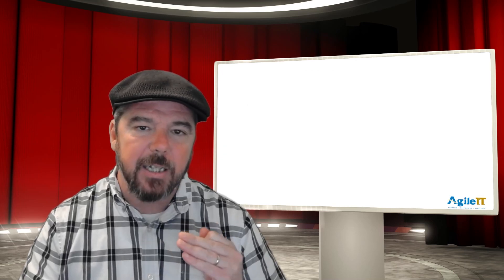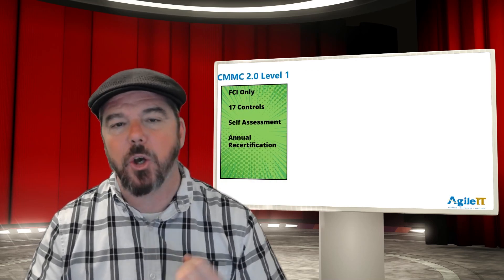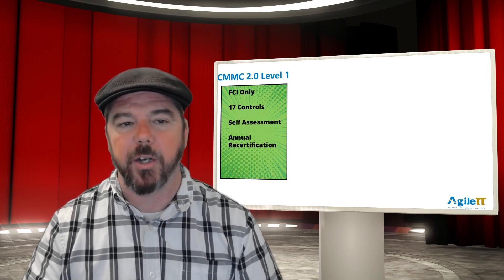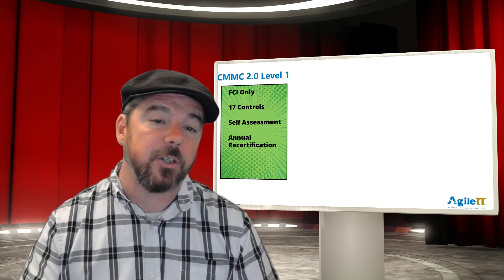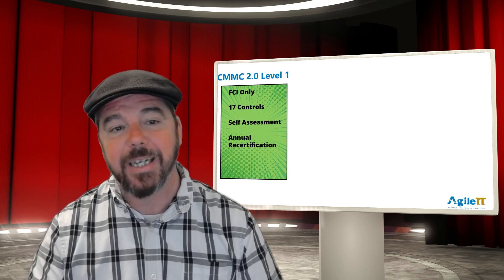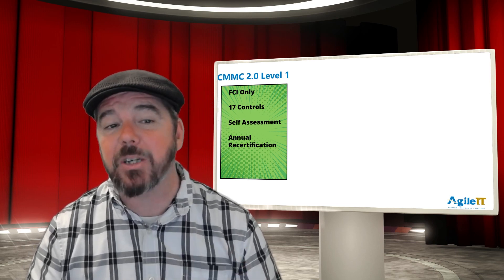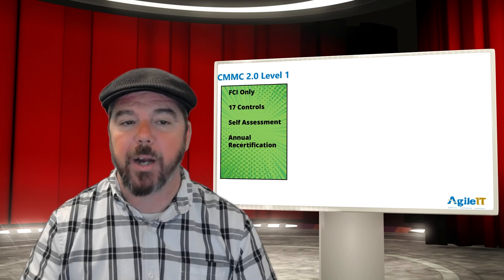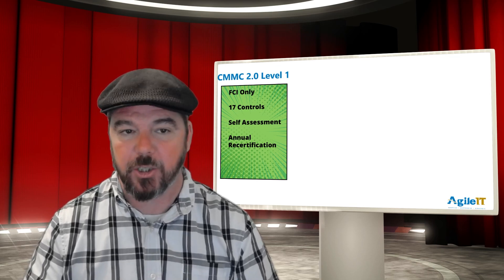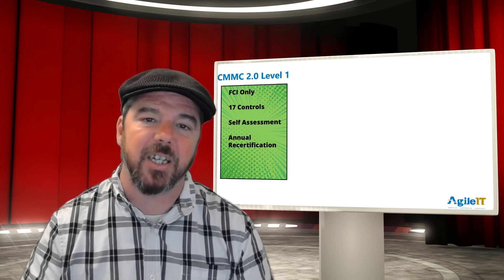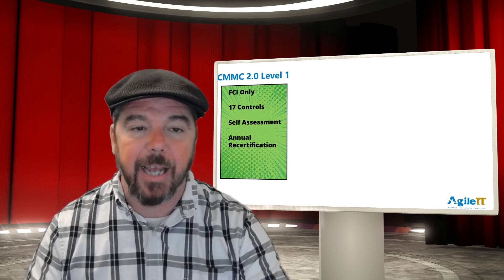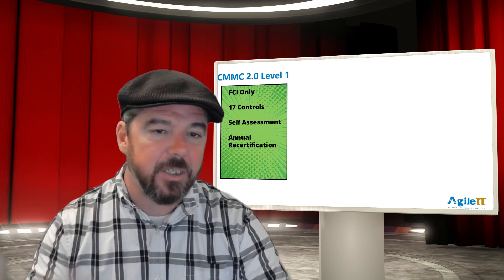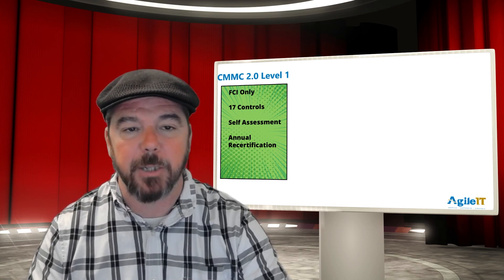So let's look at each level and the main bullet points. CMMC level one is for federal contract information only. It still has the 17 controls from CMMC 1.0. It is now a self-assessment that requires annual recertification. There is no longer a need to have an assessment organization come in — they're just going to take your word for it with an SSP.